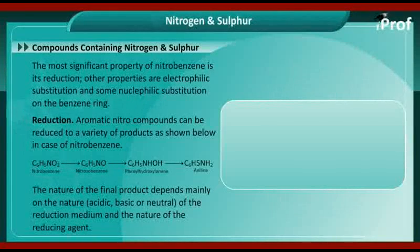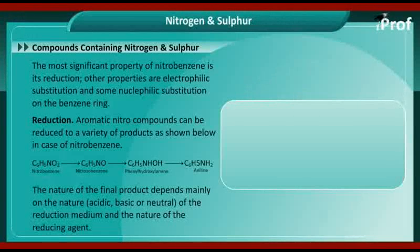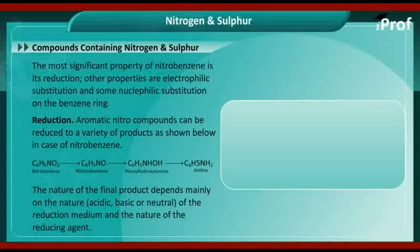Reduction. Aromatic nitro compounds can be reduced to a variety of products. The reaction proceeds: C6H5NO2 (nitrobenzene) gives C6H5NO (nitrosobenzene), further gives C6H5NHOH (phenylhydroxylamine), and further gives C6H5NH2 (aniline). The nature of the final product depends mainly on the acidic, basic, or neutral nature of the reduction medium and the nature of the reducing agent.